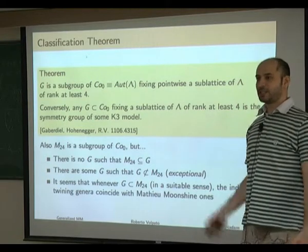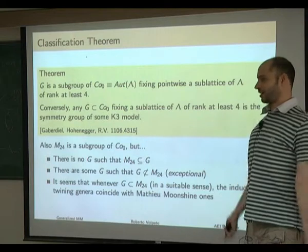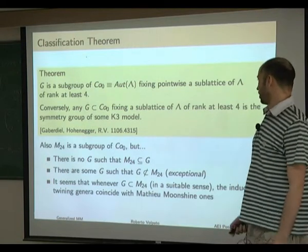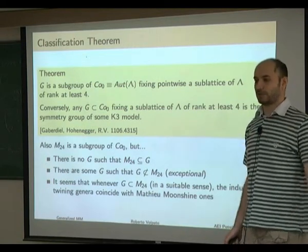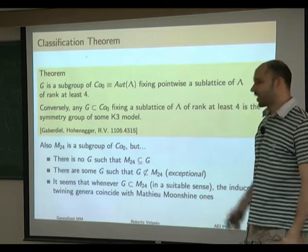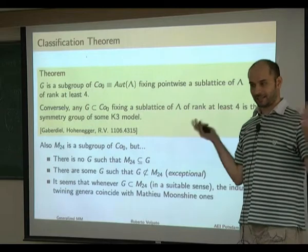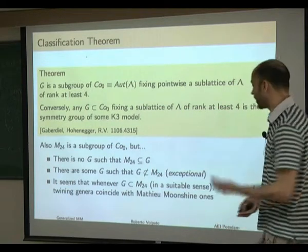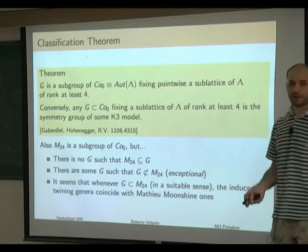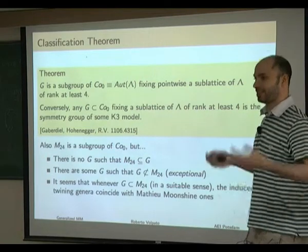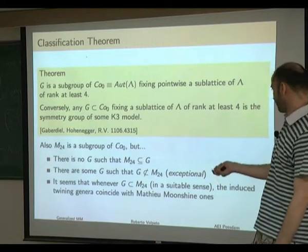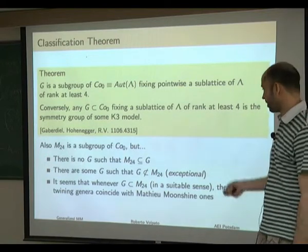So it looks like M24 has nothing to do with the symmetries of K3 sigma models. On the other hand, there are some hints that there might be some relation. One hint is the Mukai theorem. There is another observation based on experimental data: whenever the group is a subgroup of M24 in a precise sense, the twining genera induced by the symmetry exactly coincide with the ones from Mathieu Moonshine.